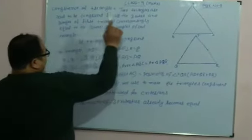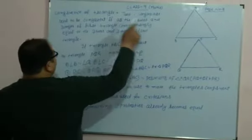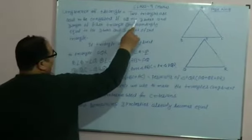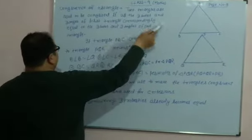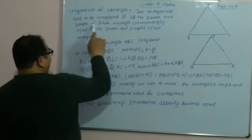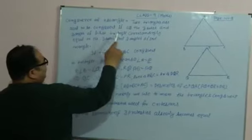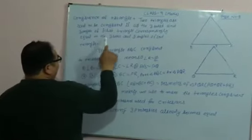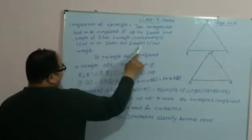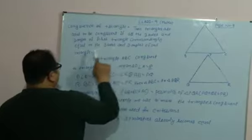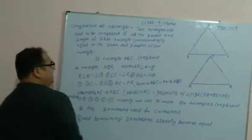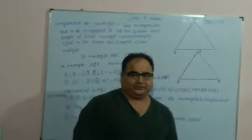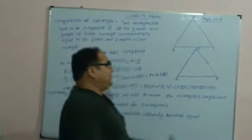Two triangles are said to be congruent if all three sides and three angles of the first triangle are correspondingly equal to the three sides and three angles of the second triangle — then these two triangles are congruent.